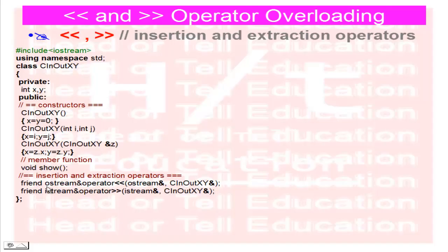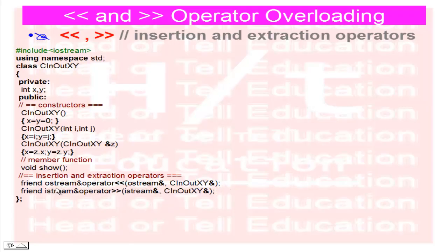For the extraction operator, the return type is ostream reference, using keyword operator with the extraction operator, receiving two parameters: ostream reference and CInOutXY class reference. Similarly, for the insertion operator, the return type is istream reference, using keyword operator with the insertion operator, and parameters are istream reference and CInOutXY reference. Only this function structure can be used to overload insertion and extraction operators.